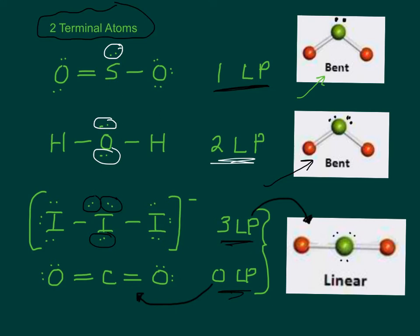If it's linear, the angle is 180 degrees. It's in a straight line. Now, if it's bent with one lone pair, it's less than 120 degrees because 120 degrees is as far apart as three things could get, but lone pairs repel more, so less than 120. And we've already done this one. This is less than 109.5.